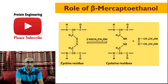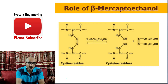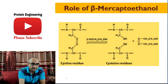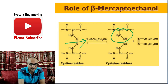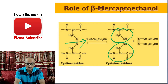Beta-mercaptoethanol is a reducing agent. It reduces disulfide bonds in a protein. Cysteines in a protein form disulfide bonds, which are covalent in nature. If you treat a protein having disulfide bonds with beta-mercaptoethanol, these disulfide bonds get reduced and free cysteines are produced. So beta-mercaptoethanol is a disulfide bond reducing agent which breaks disulfide bonds and makes the cysteines free.